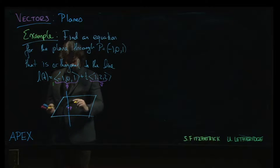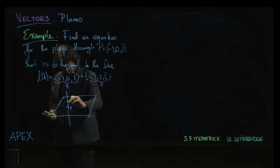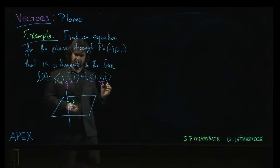And the direction vector then, because V is in the direction of the line, that means it's also a normal vector for the plane.